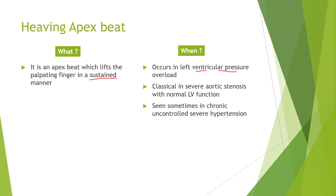A heaving apical impulse occurs when there is left ventricular pressure overload. The classical example is severe aortic stenosis, but the LV function must be normal. Once LV function worsens, the heaving quality is lost, so a patient may not have a heaving apical impulse despite severe aortic stenosis. Very rarely, it is seen in chronic uncontrolled severe hypertension — systolic BP of 180 mmHg or diastolic above 100 mmHg for a long time — causing significant left ventricular hypertrophy. But classically, we see it in aortic stenosis with normal LV function.